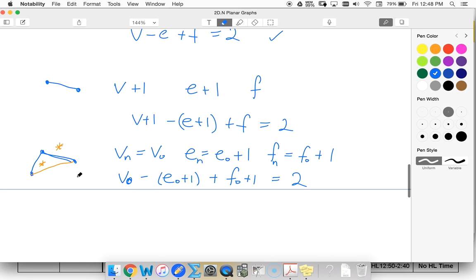Because always, if I add a new edge without adding new vertices, I'm going to create a new region. If I add new vertices and a new edge but don't connect it back in another way, then I don't create any new faces.